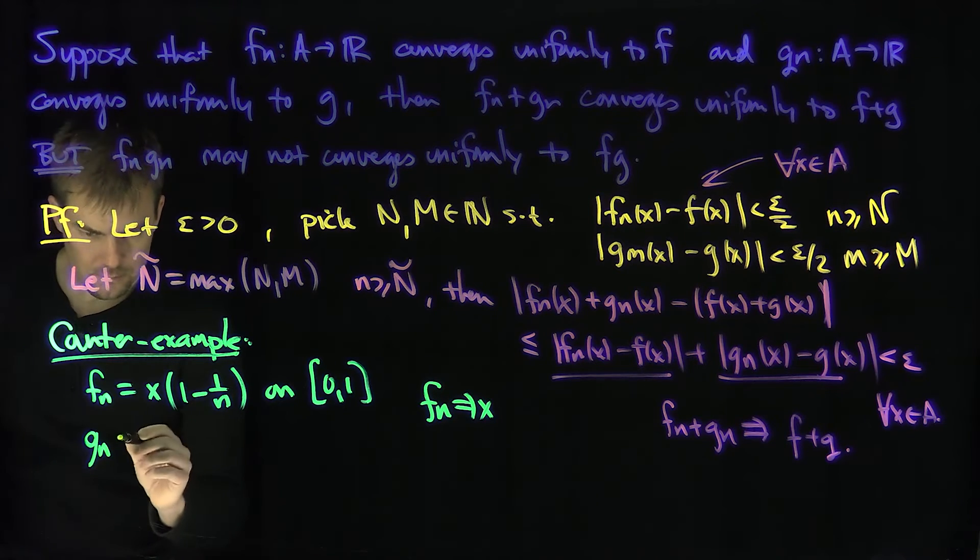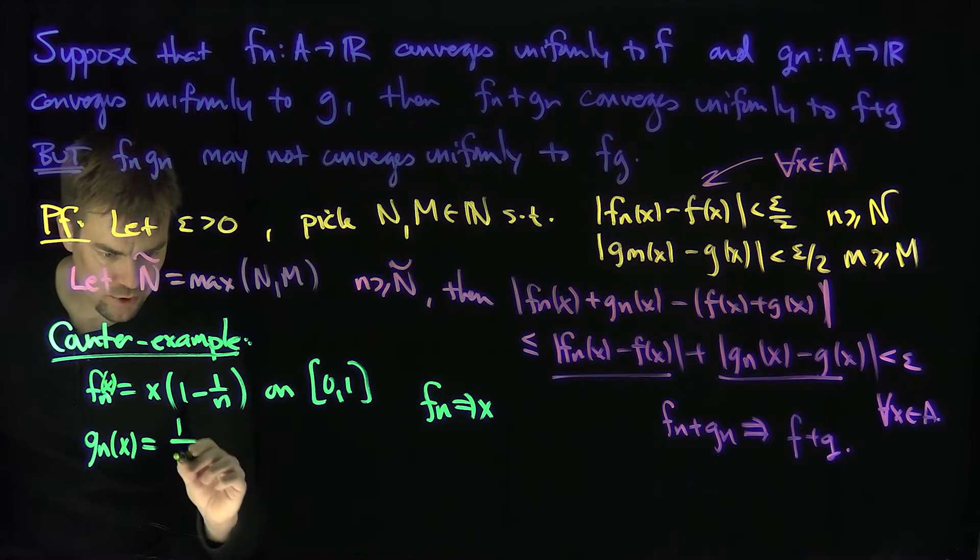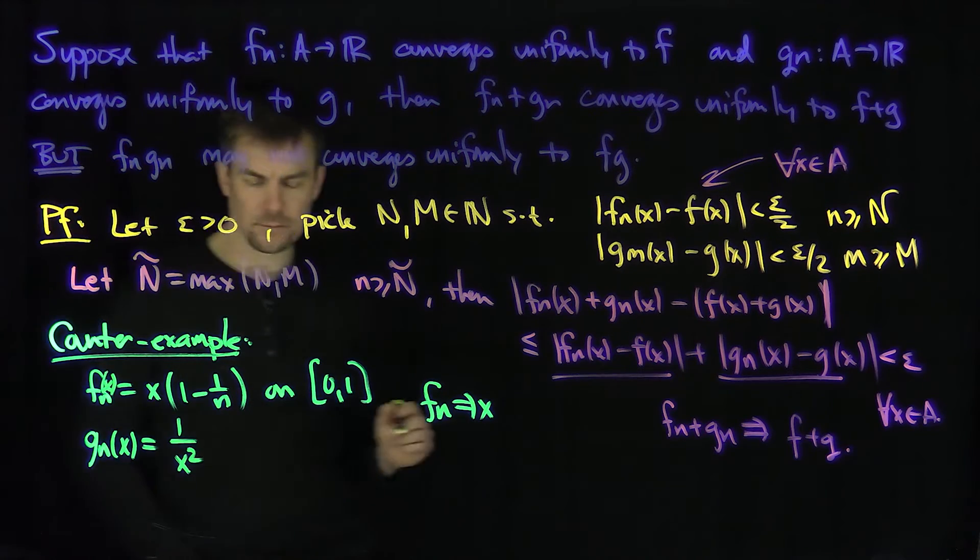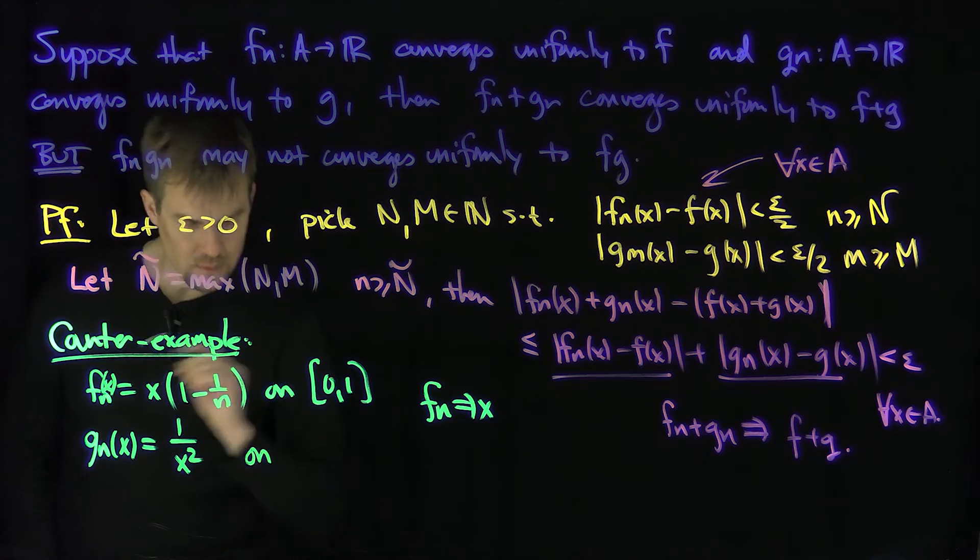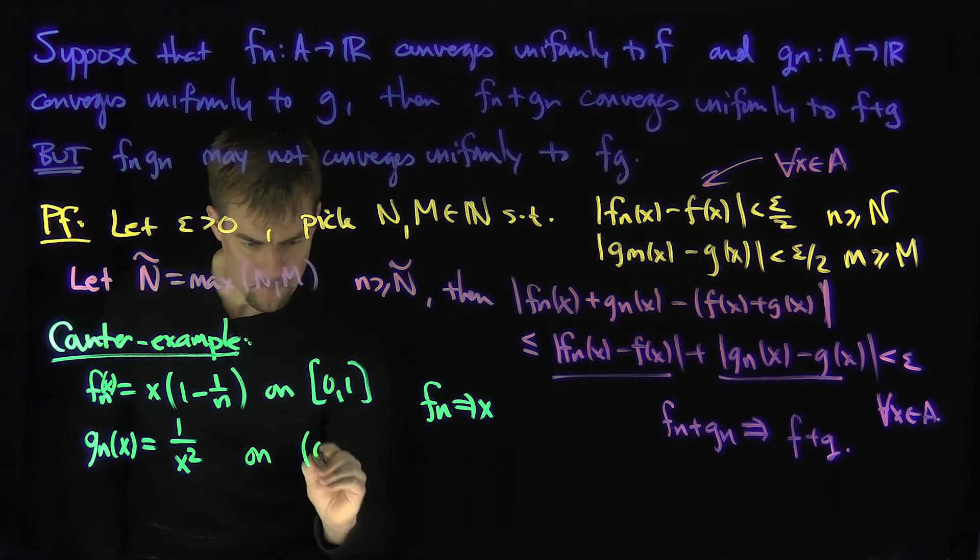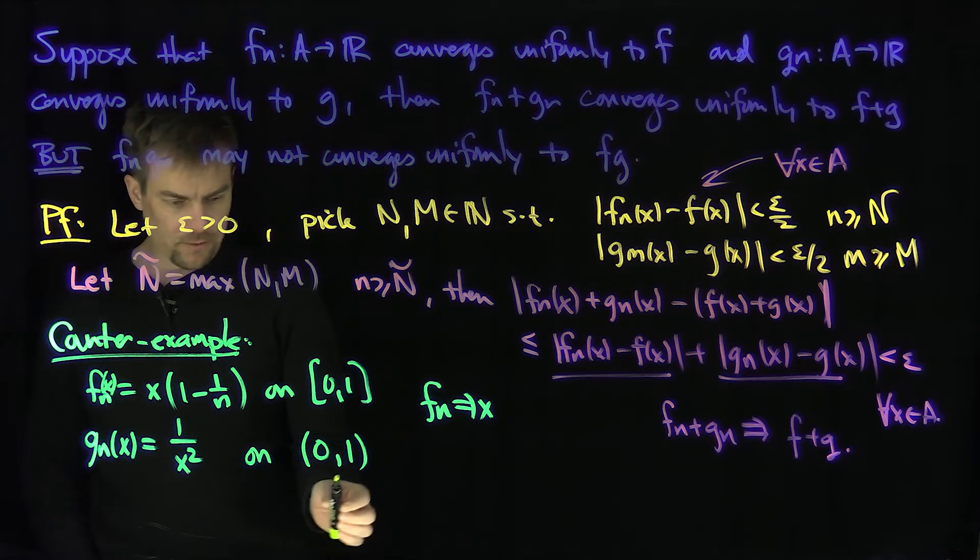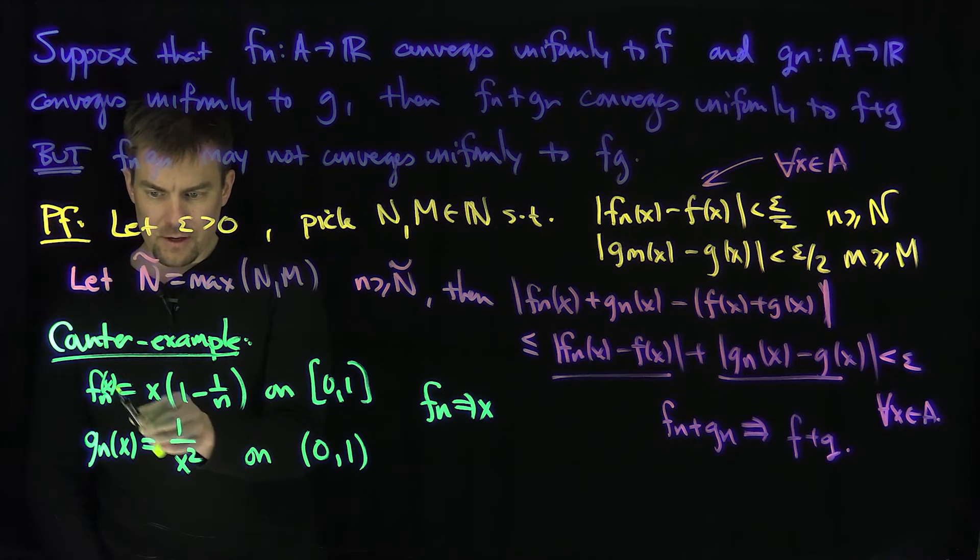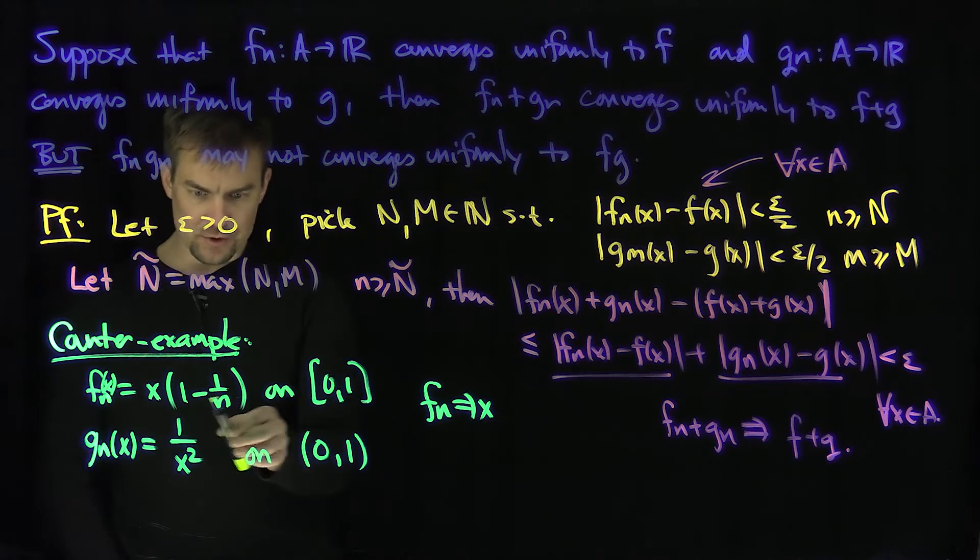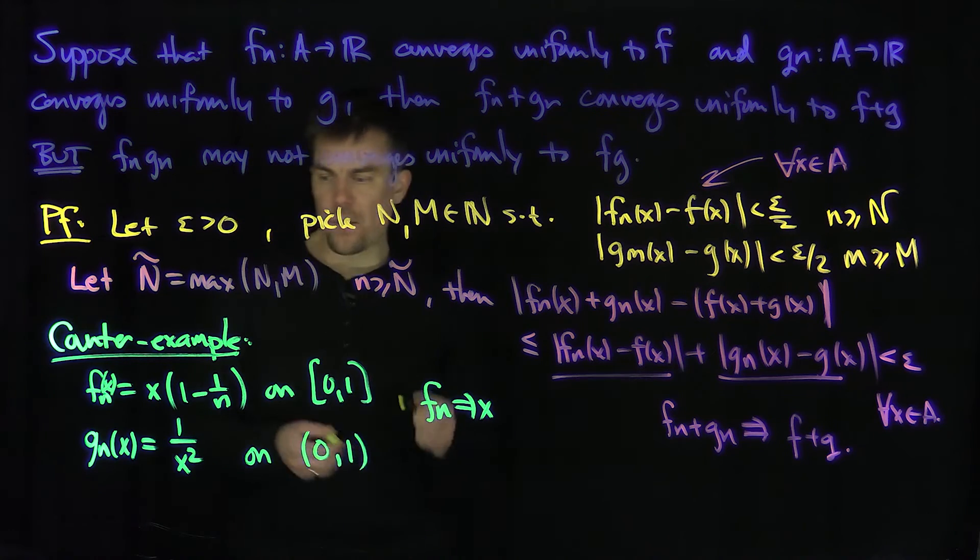And Gn(x) is going to be a constant sequence, just 1 over x squared, on the interval (0,1). This function is well defined on the open interval (0,1), and Fn(x) also converges to x uniformly on the open interval if it converges on the closed interval.